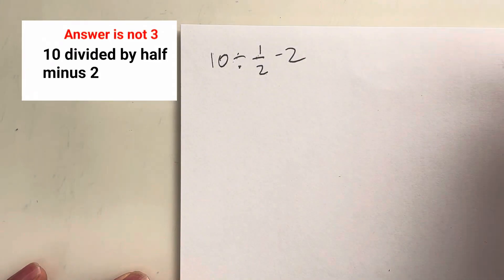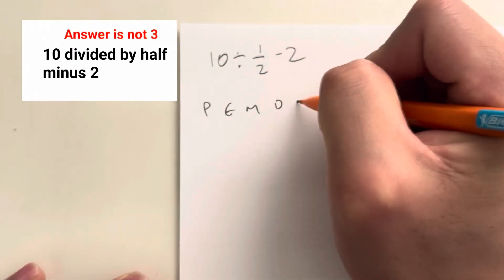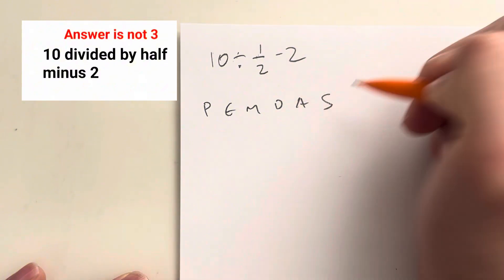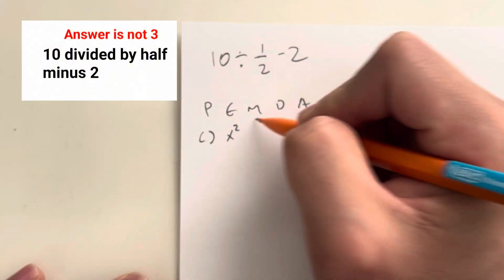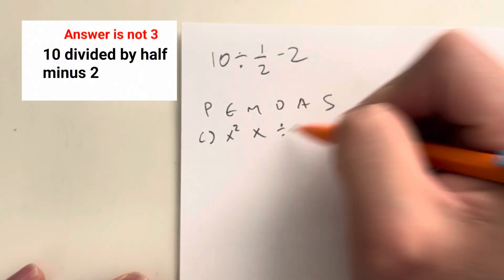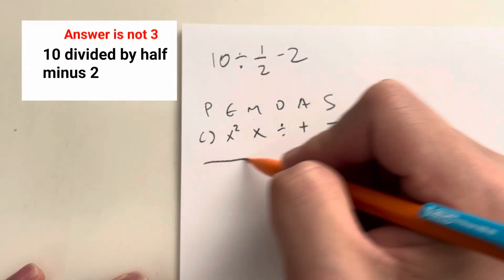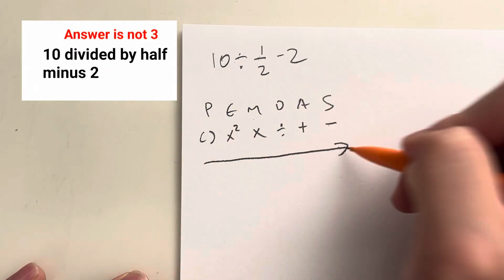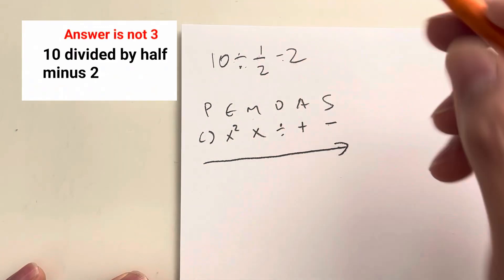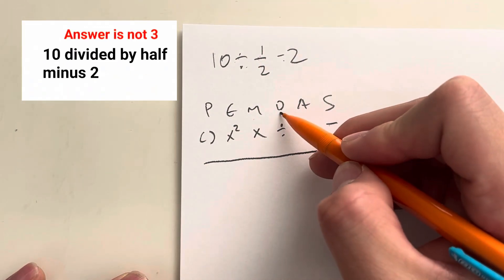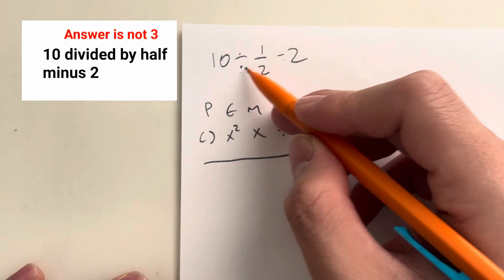Now in order to solve this, we have to remember PEMDAS: P stands for parentheses, E stands for exponents, M is multiplication, D is division, A is addition, and S is subtraction. We're going to go in this order. So in this case, we see division and subtraction. D comes before S, so we're going to do division first.